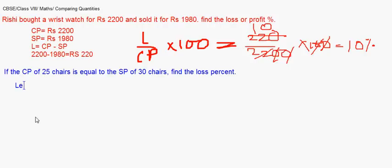Let the cost of each chair be 1 rupee. So the cost of 25 chairs will be Rs 25. Now this Rs 25 is also equal to the selling price of 30 chairs. There is a loss, it is quite visible, because the same chair if sold in excess numbers at the same price, there is a loss.